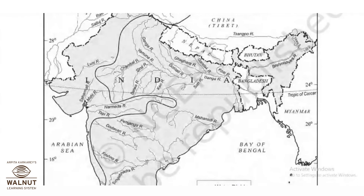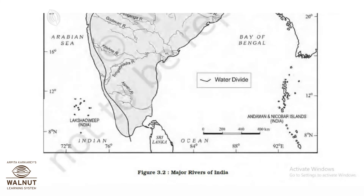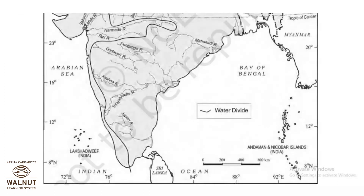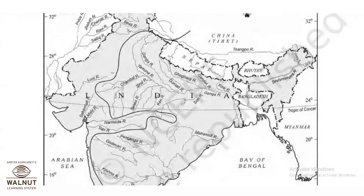We also trace Kaveri, originating in the Brahmagiri Range in the Western Ghats on the western side, then draining the states of Kerala and Tamil Nadu. Now let's go to the worksheet and see if you can answer the questions based on these rivers.